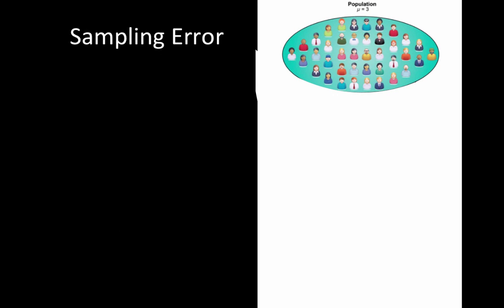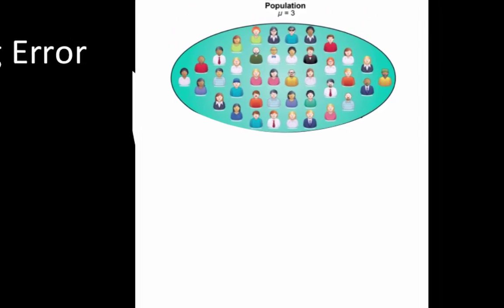Let's talk about our first objective: sampling error. We'll see this more in later chapters, but I want to introduce the idea now. Here we see population.